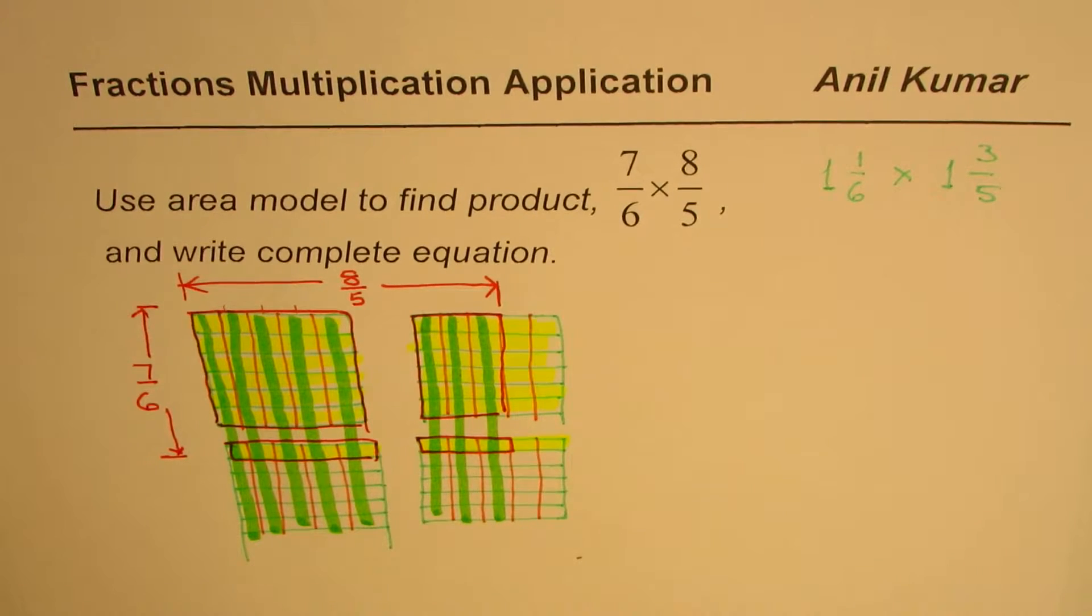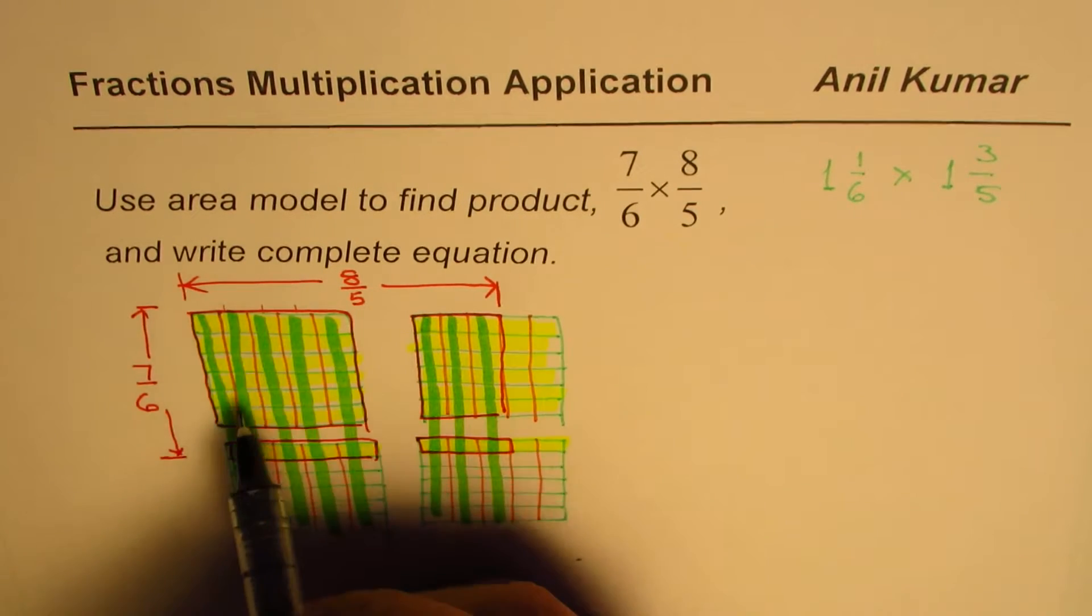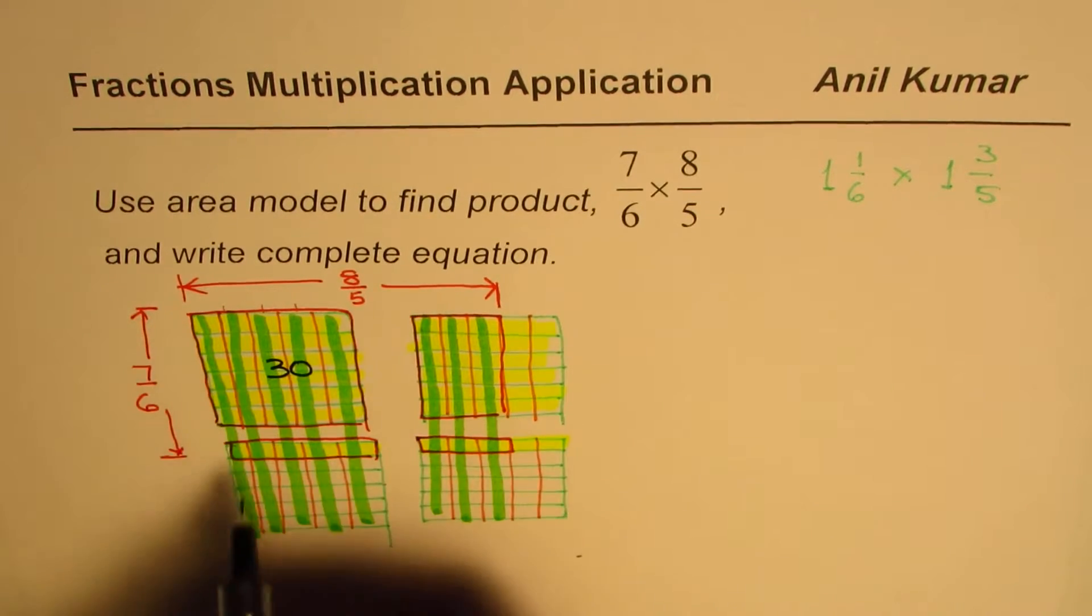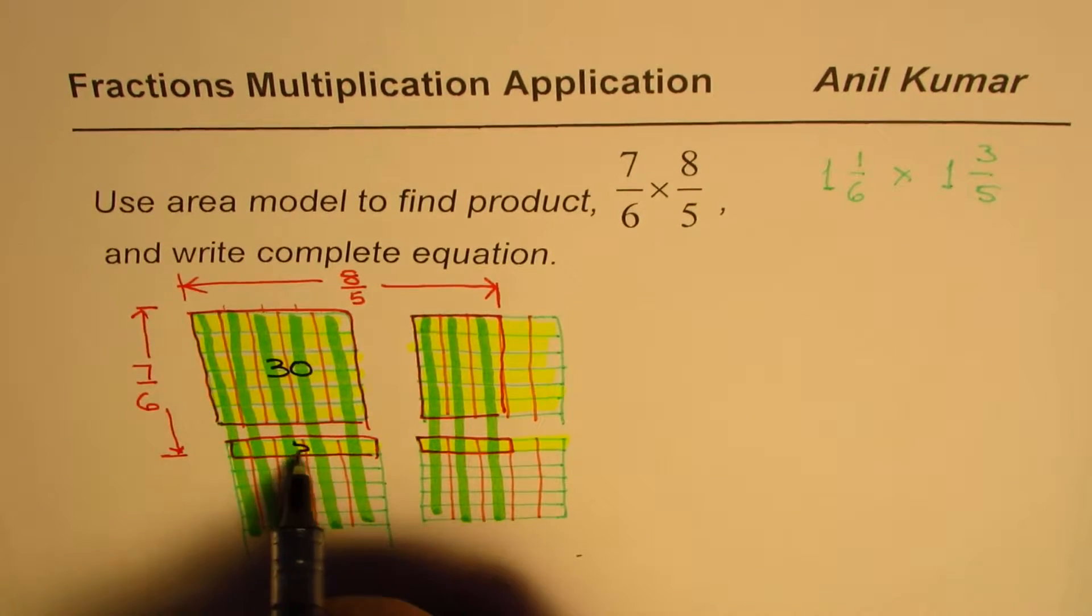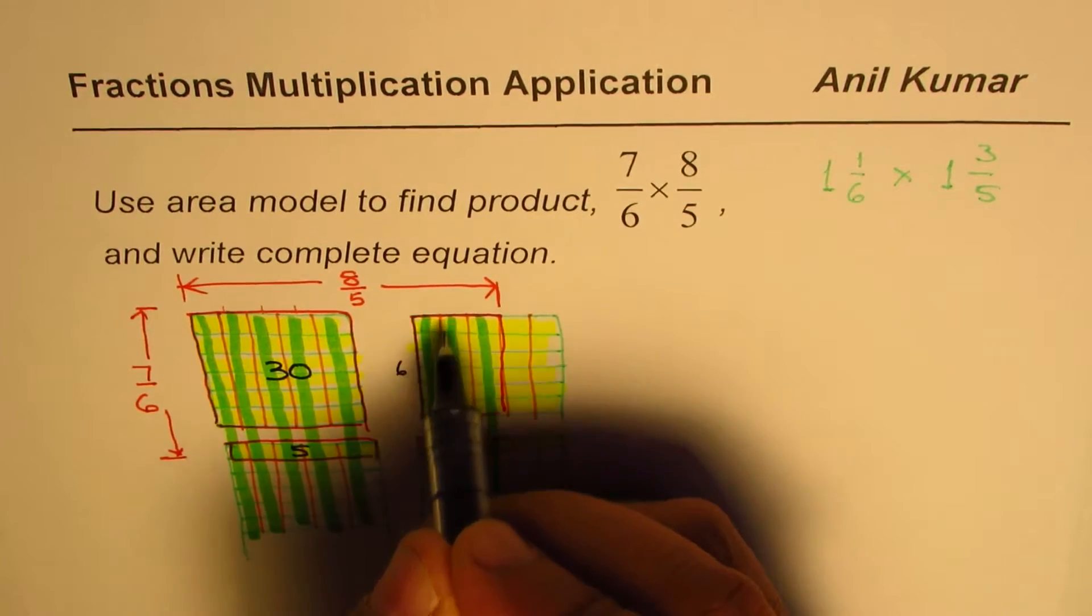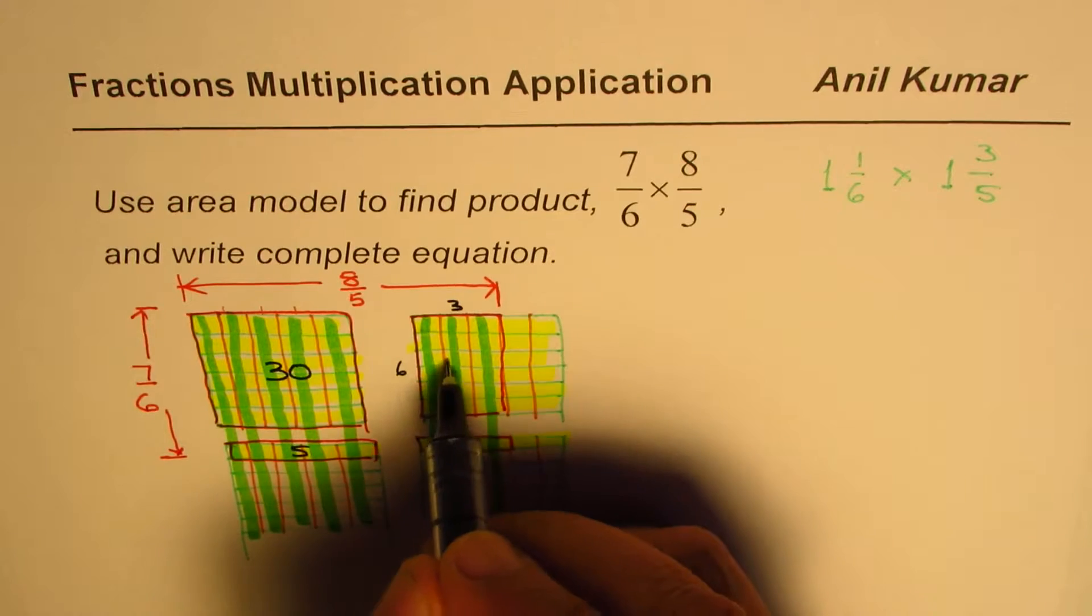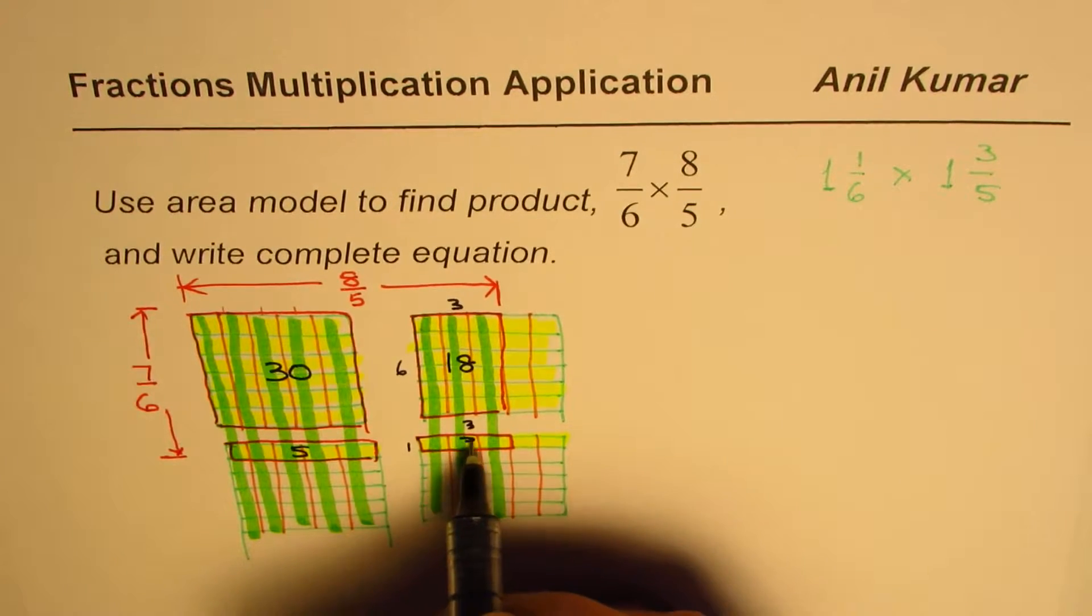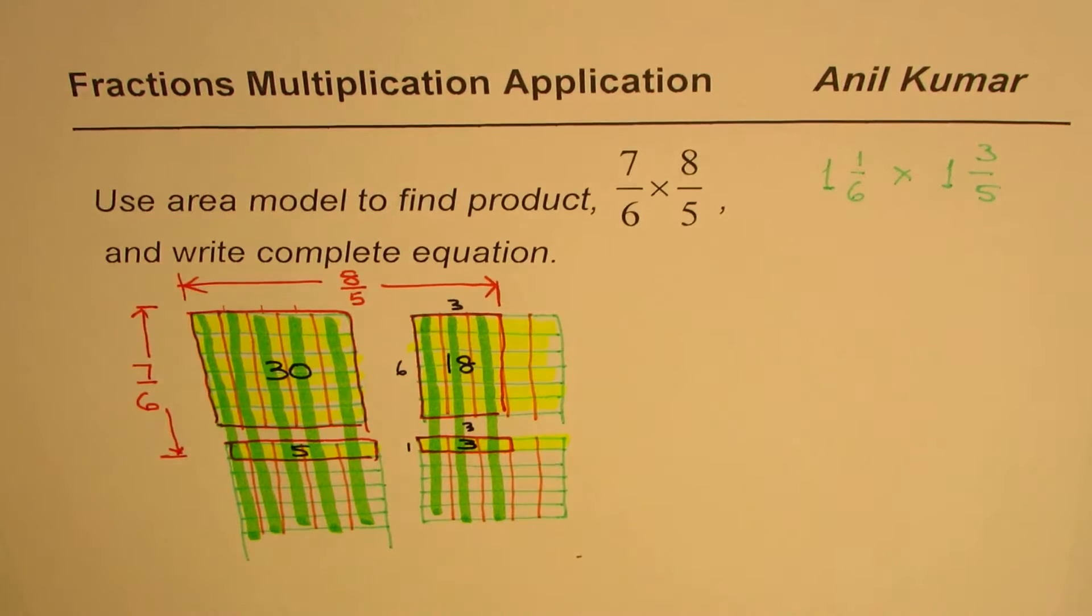Now we can count the number of rectangles. So here we have 6 times 5. If you count them, it will be 30. Now these are 5. Correct. 5. These are, here we are left with, here we have 6, and here we have 3. 6 times 3 is 18. Right. So here we have 1 and 3. That is 3.